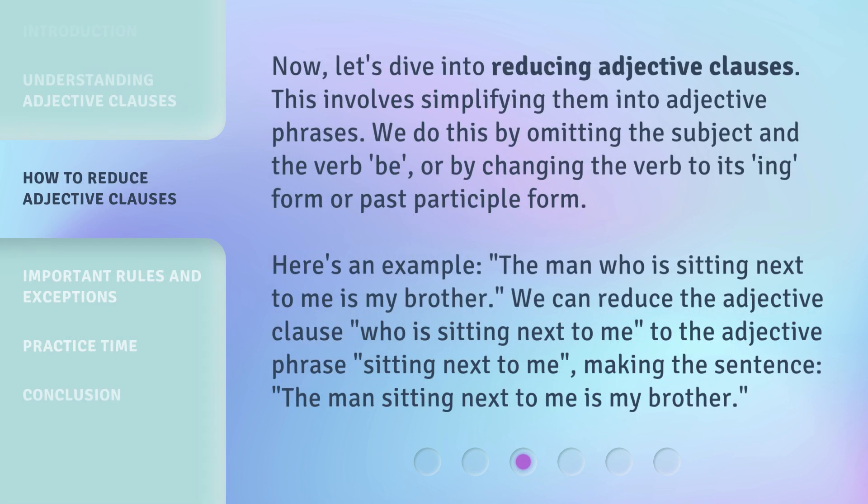Now, let's dive into reducing adjective clauses. This involves simplifying them into adjective phrases. We do this by omitting the subject and the verb 'be,' or by changing the verb to its -ing form or past participle form. Here's an example: 'The man who is sitting next to me is my brother.' We can reduce the adjective clause 'who is sitting next to me' to the adjective phrase 'sitting next to me,' making the sentence: 'The man sitting next to me is my brother.'